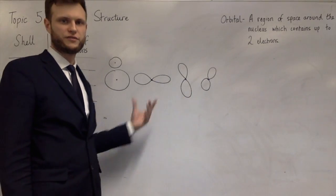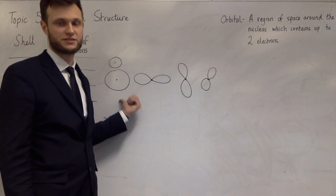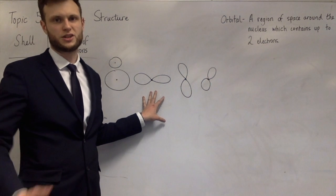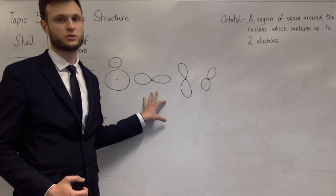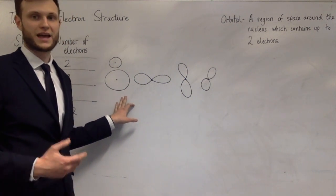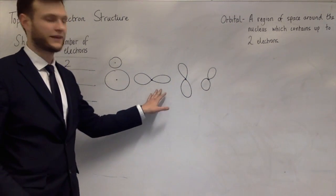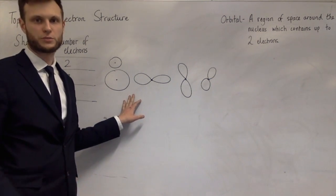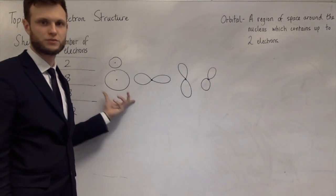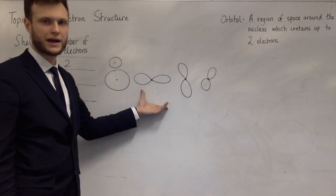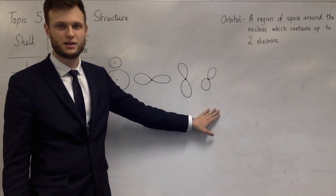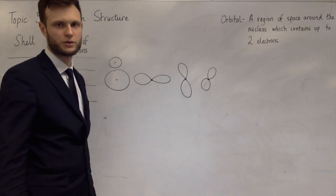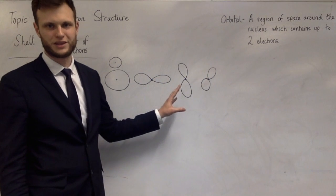And these orbitals can be of four different shapes. One of those shapes is spherical, one of those shapes is dumbbell-shaped. There are two others that you don't need to know the shape of, but you do need to know the names of the different orbitals. The spherical one is called an S, and the dumbbell-shaped one is called P. And these different shapes are called subshells. Specifically, an S subshell contains one S orbital. A P subshell contains three P orbitals. One of them pointing left to right, one of them up and down, and one of them forward and backwards. Those are called PX, PY, and PZ.